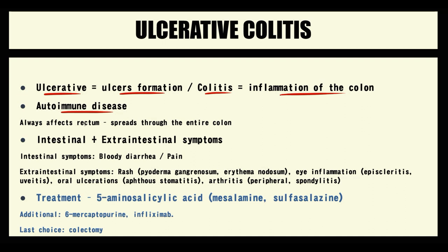The most specific feature of ulcerative colitis is that inflammation always starts in the rectum and then spreads through the entire colon. So if the rectum is not involved, it is most probably not ulcerative colitis. In ulcerative colitis, the autoimmune reaction triggers inflammation that begins in the rectum and spreads through the large intestine, so the rectum is always affected.